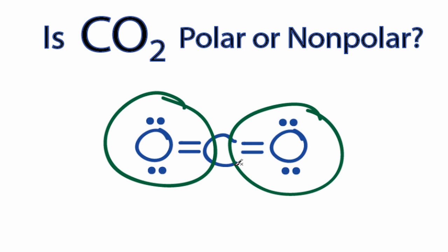The Lewis structure doesn't always give you a perfect picture of the molecular geometry, but in this case we can see that we have the same thing on both sides.